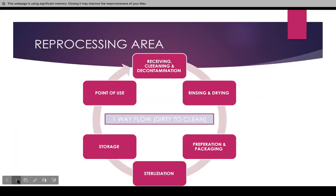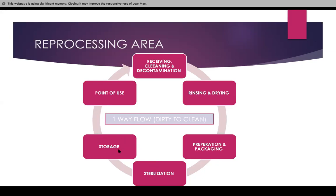The reprocessing cycle must be a one-way flow — it has to go from dirty to clean. First, you have the receiving, cleaning, and decontamination. Then you rinse and dry. Then you prepare and package. You send it off for sterilization in the autoclave. Then it goes to a storage area on the clean side. You cannot have anything dirty on the clean side — that is the whole point of a one-way flow.